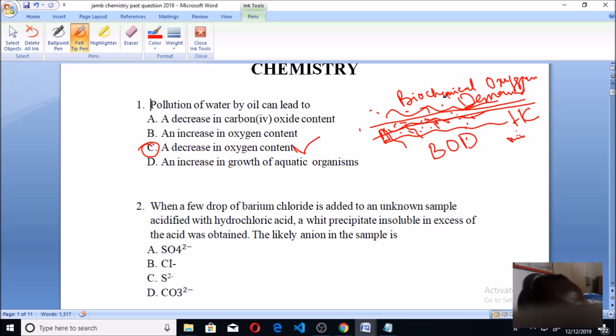Let's move on to the next question. When few drops of barium chloride is added to an unknown sample acidified with hydrochloric acid, a white precipitate insoluble in excess of the acid was obtained. The likely anion in the sample is SO4^2-. This is the right way to write it. The sulfate ion causes this white precipitate, because sulfate ions in solution are detected using barium chloride.